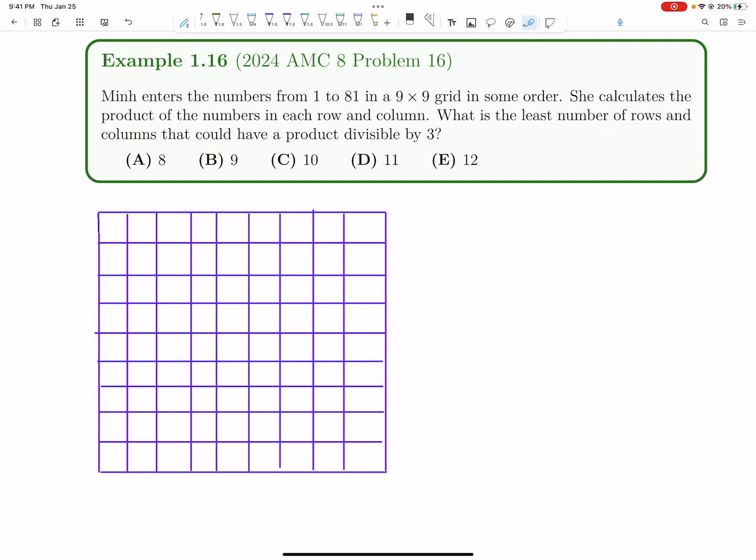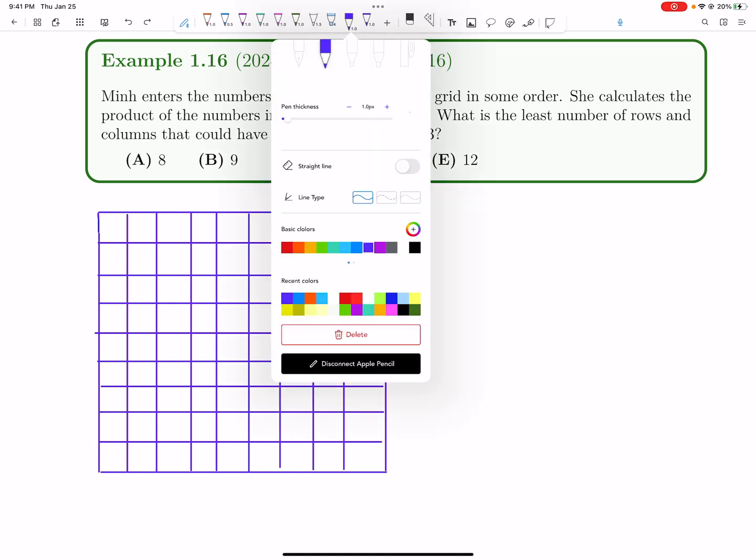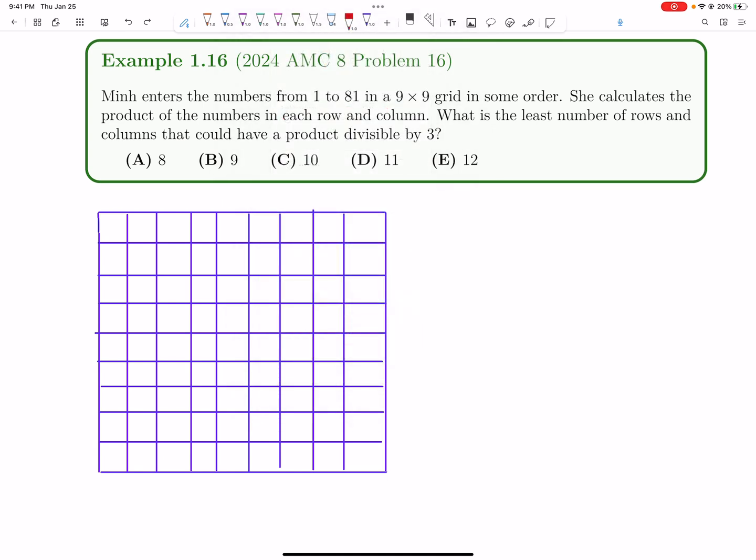The first thing to notice here is if there's even one number in a row or column that's a multiple of 3, then the entire row or column will also be a multiple of 3, because a multiple of 3 times any other number is just going to be a multiple of 3. So now the question becomes, from 1 to 81, how many multiples of 3 are there? That's simple. That's just 81 divided by 3. So there's 27 multiples of 3 from 1 to 81.